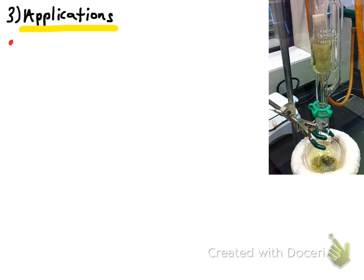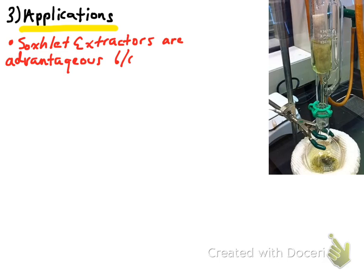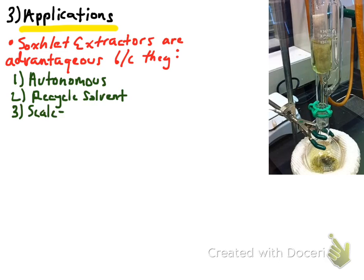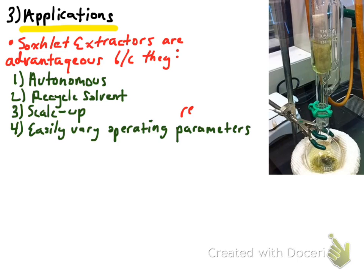Soxhlet extractors are very advantageous in a number of settings because they are: one, autonomous; two, they recycle solvent; three, they are scalable; and four, they are easily varied in their operating parameters. The nice thing about a Soxhlet is that you can start it, set a timer, come back, and the extraction will be complete — very attractive compared to methods that require continuous manual extraction. The solvent recycling is also attractive: you use a fixed volume of solvent that you can recover using a rotary evaporator later on.